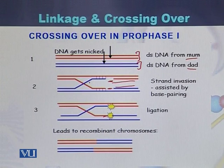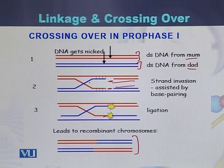Here we can see the original color was red but a fragment of blue was attached to the red chromosome. So the original double-stranded DNA of the mother was red and of the father was blue, but the chromosomes are now in the form of recombinants. This is due to chiasmata formation, or crossing over between the homologous chromosomes.